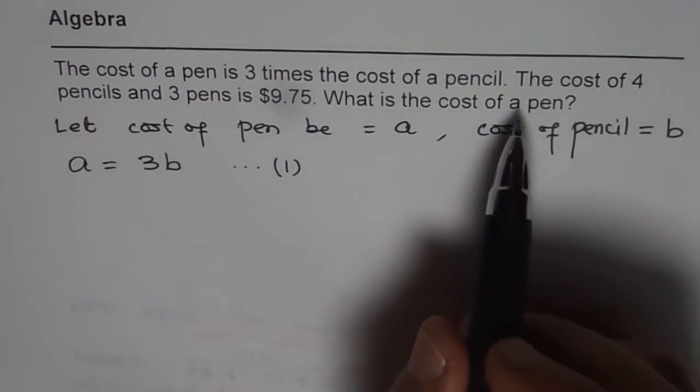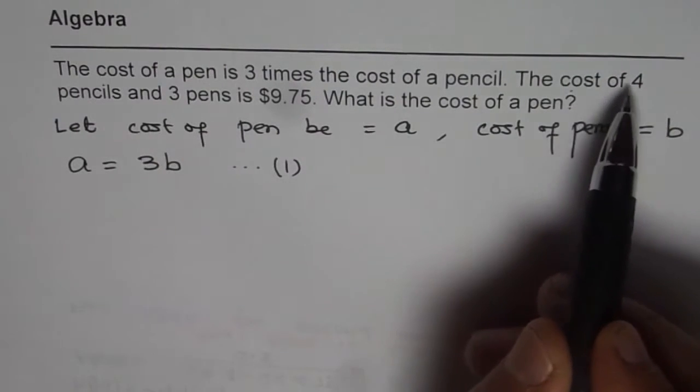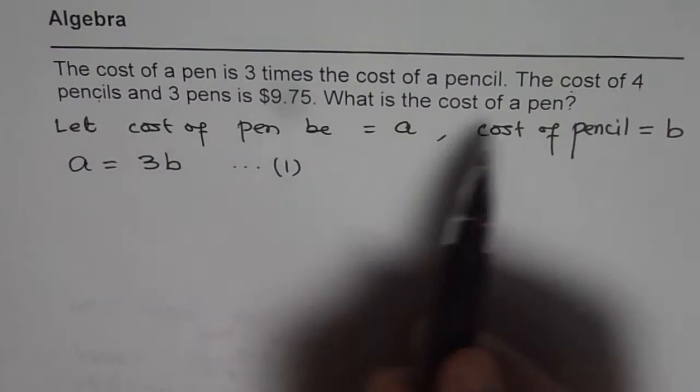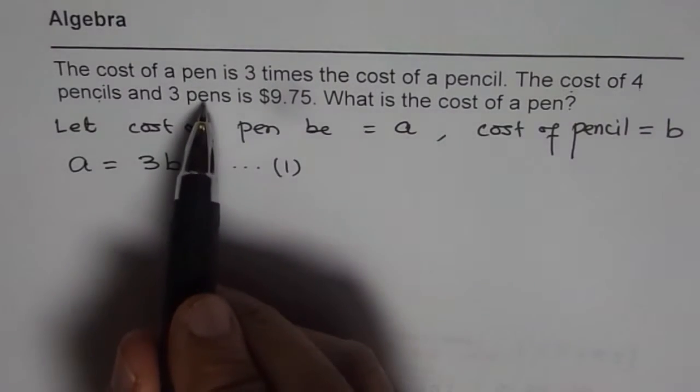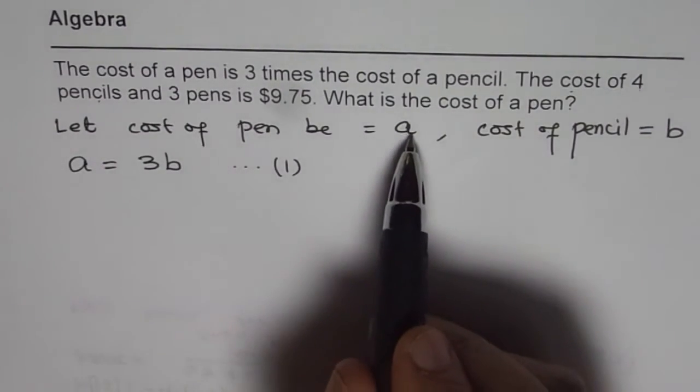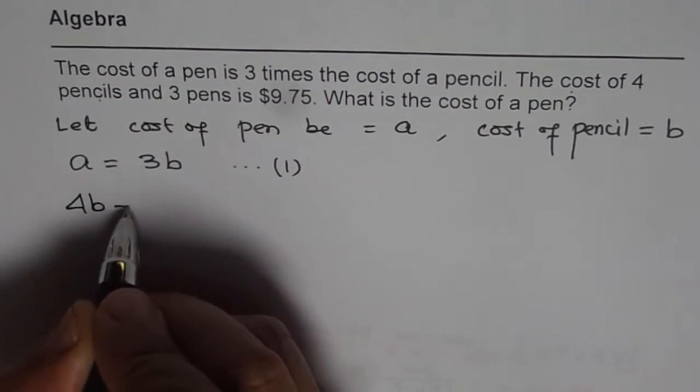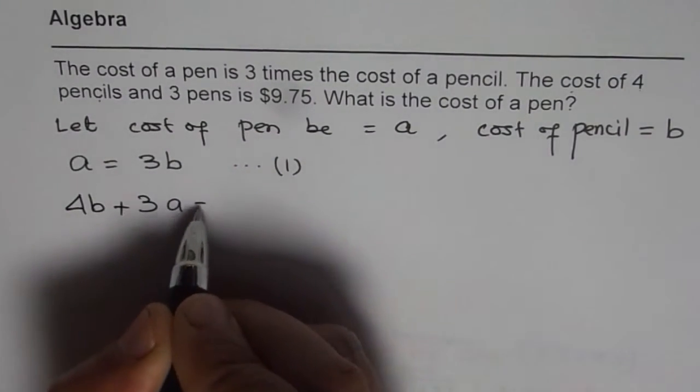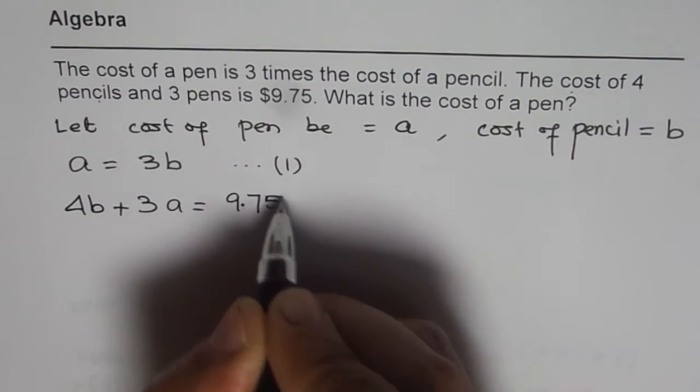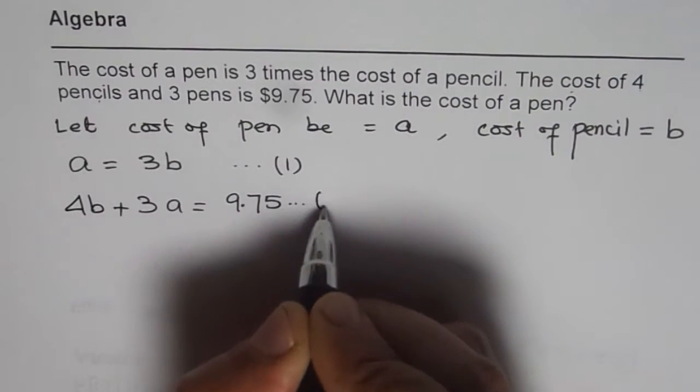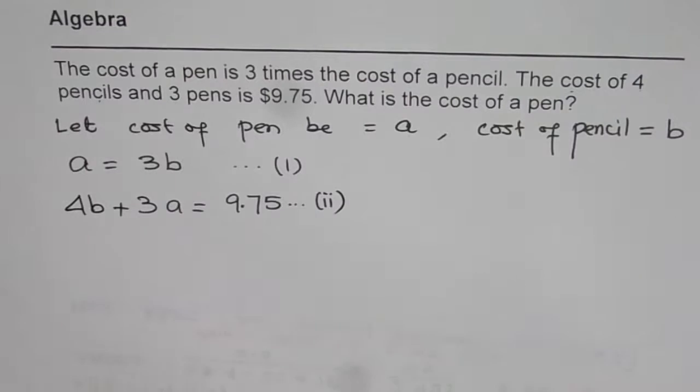Second statement. The cost of four pencils, four pencils means 4B and three pens, 3A is 9.75. So we have 4B plus 3A equals to 9.75. So we get our second equation.